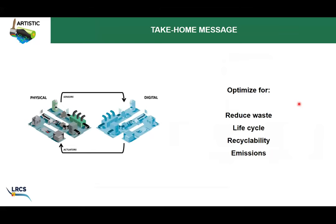These were just two simple examples of using physics-based models coupled with artificial intelligence optimization — in this case optimizing three input parameters with two or four output parameters. In principle, within this digital twin framework, we can expand it in any direction: we could include life cycle assessment analysis, descriptions of emissions, or recyclability. We can optimize for performance, but also to reduce waste, increase life cycle, improve recyclability, or lower emissions.